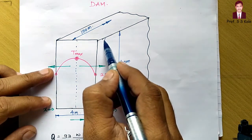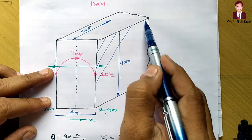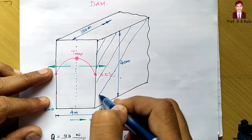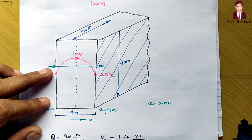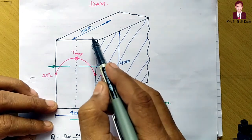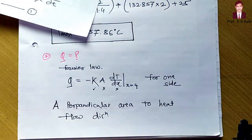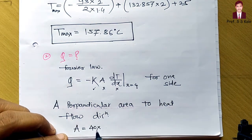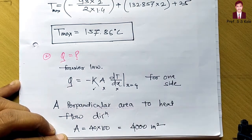The perpendicular area is height times width. The height is 40 meter and the width is 100 meter. So area A = 40 × 100 = 4000 m². That is the perpendicular area. Now I need to determine dT/dx at x = 4.